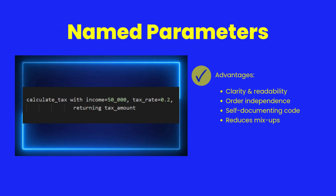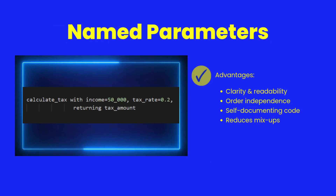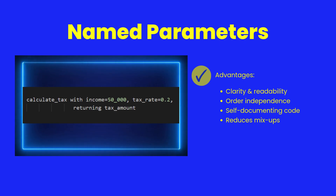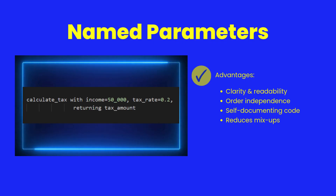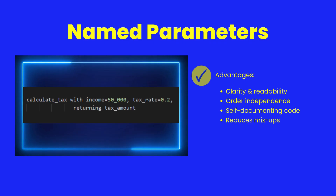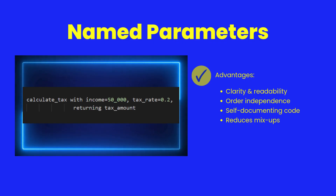Named parameters are one of Shear Power's biggest boosts to readability. They let you call routines in any order, reduce errors, and make your code self-documenting. You can even pass variables directly if their names match the parameter names.